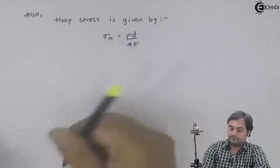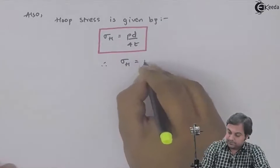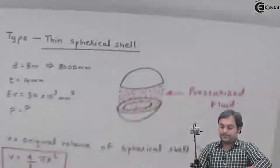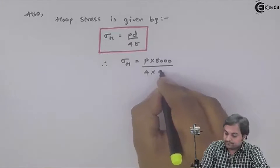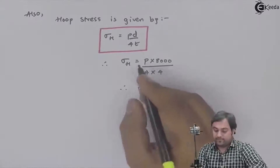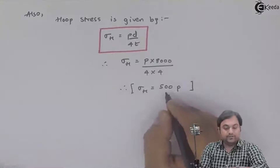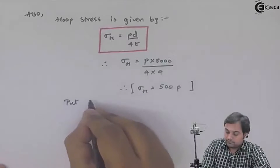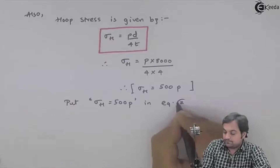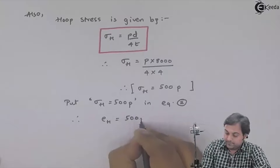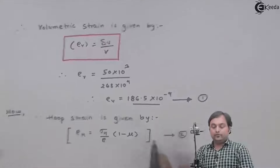The hoop stress is given by σ_h = PD / 4t. Therefore, hoop stress = P × 8000 / (4 × 4) = 500P. Substituting this into equation 2, hoop strain = 500P / E × (1 − μ).